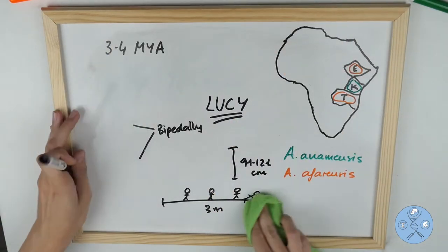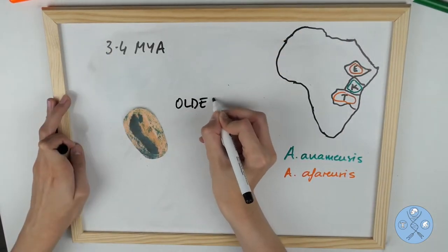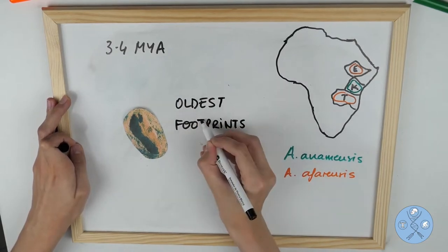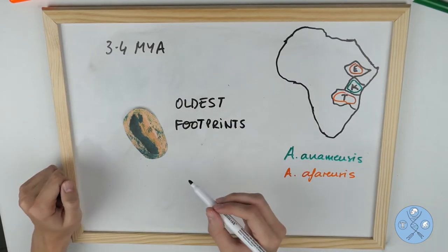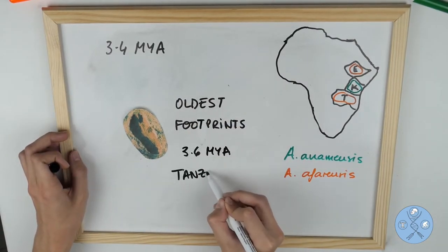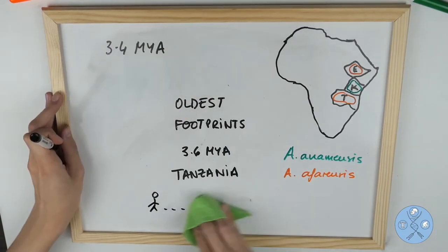Moreover, the oldest preserved trails of hominin footprints date from 3.6 million years ago in Tanzania, providing evidence that a contemporary early hominin was able to walk bipedally.